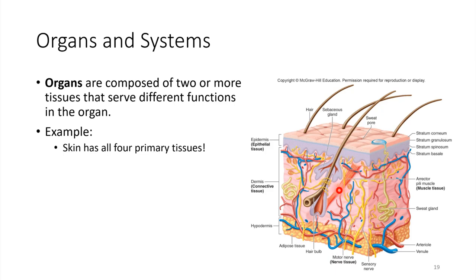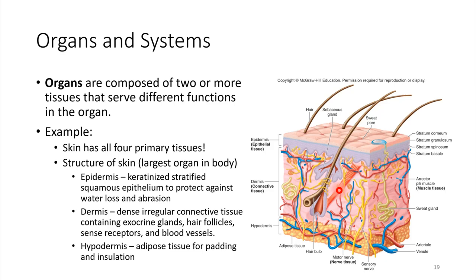So these tissues work together in order to accomplish some function. The structure of skin is complex, but I'd encourage you to just think about it in terms of the four primary tissue types. Those four different tissue types are working together to do what skin does.